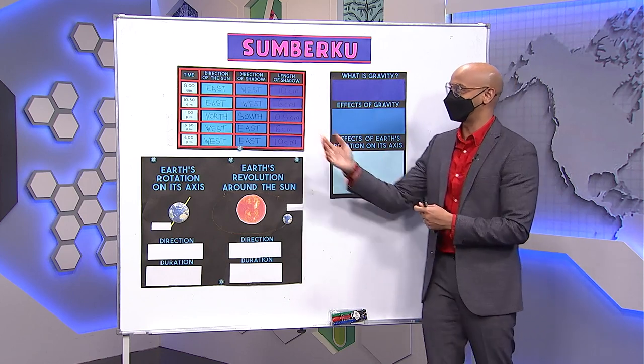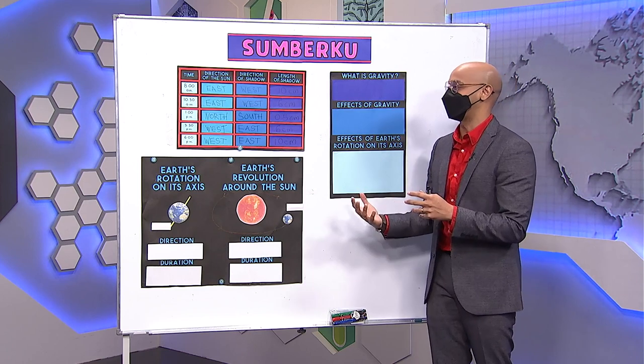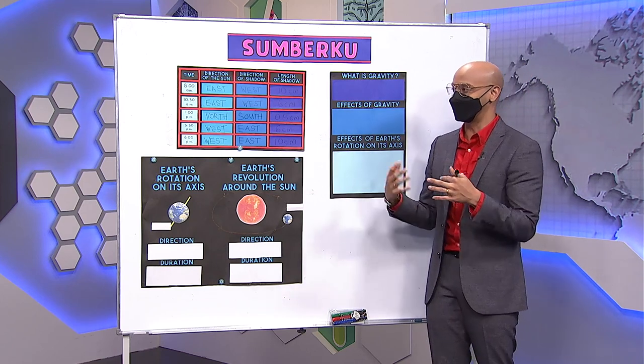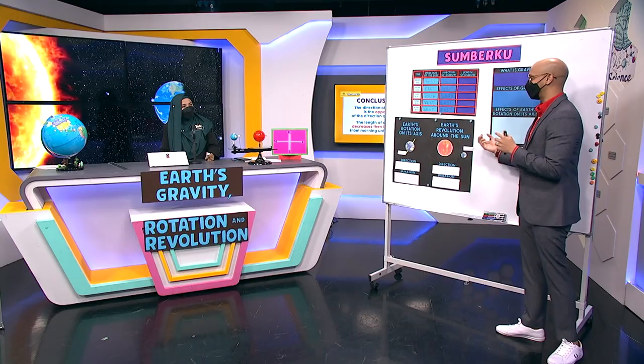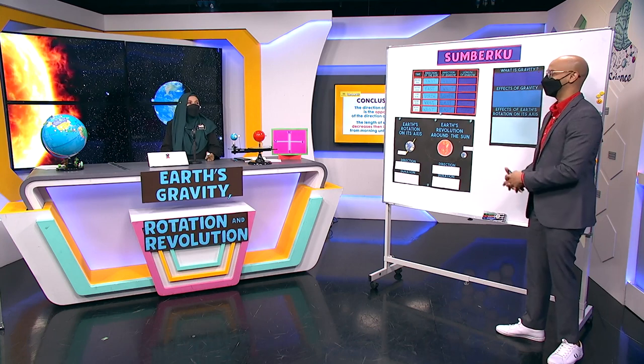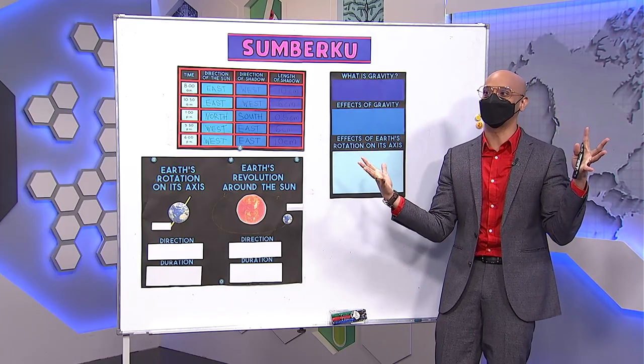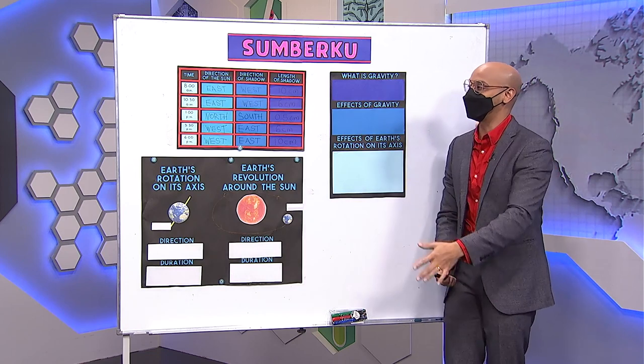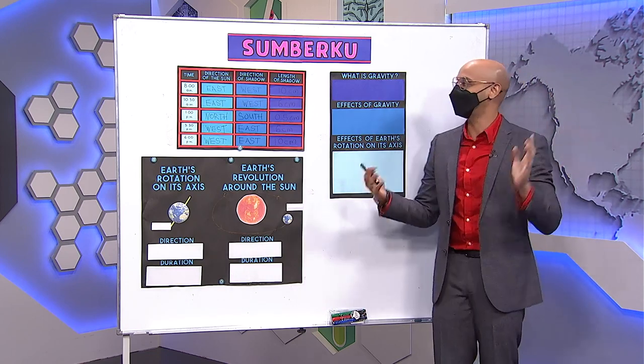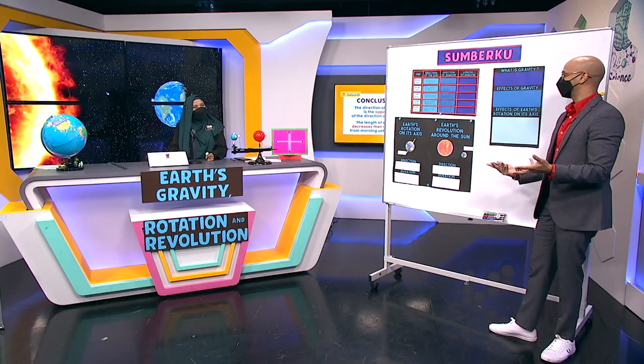Those are the effects of Earth's rotation. Because the Earth rotates, we can see the sun appears in the east, then north, then west throughout the day. And the shadow of objects on Earth changes in both direction and length — early in the morning you have a longer shadow, and towards the afternoon it becomes very short.